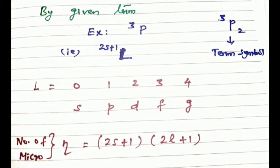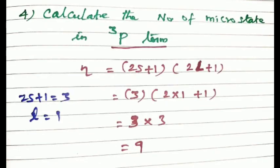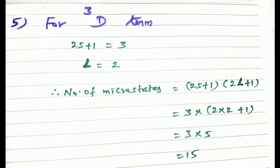Using the formula 2S plus 1 into 2L plus 1, let's find microstates for the ³P term. Here the superscript 3 means 2S plus 1 equals 3, and P means L equals 1. So: 2L plus 1 equals 2 into 1 plus 1 equals 3. Total microstates equals 3 into 3 equals 9. For the ³P term, microstates equal (2S+1)(2L+1) equals 3 times 5 equals 15 when L equals 2.